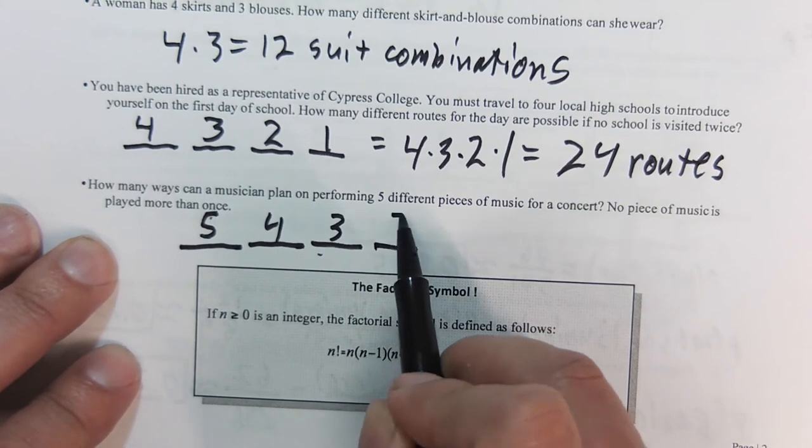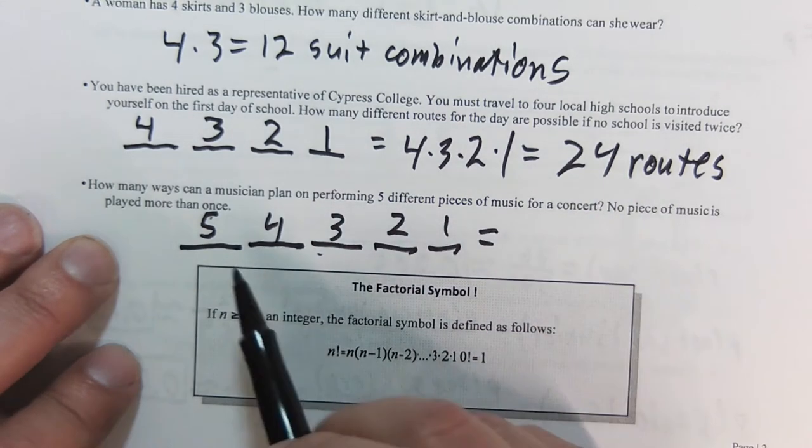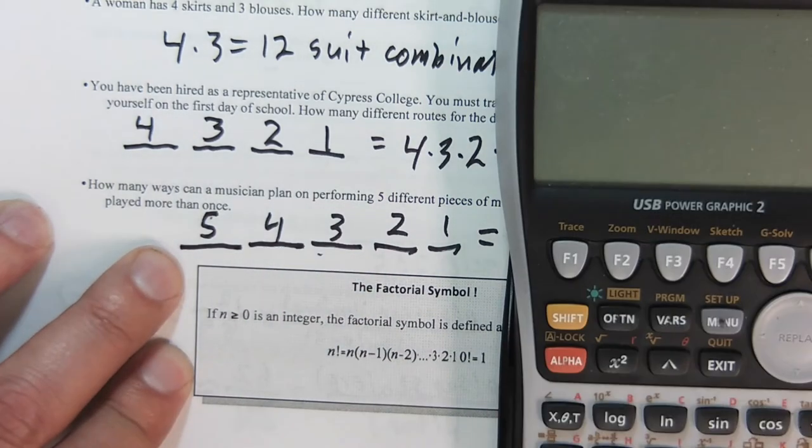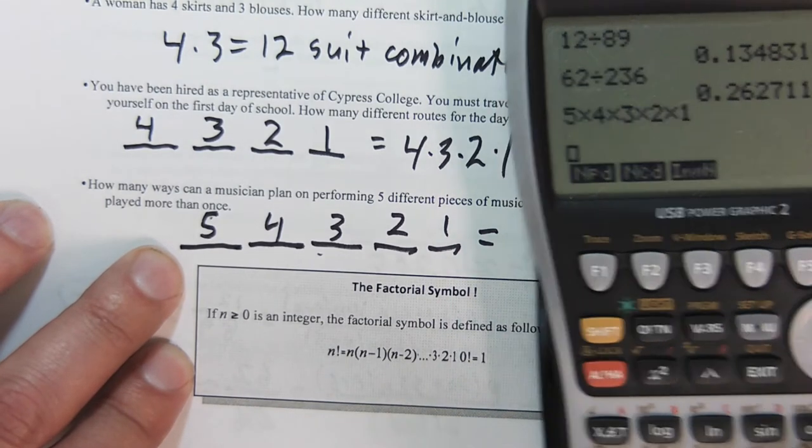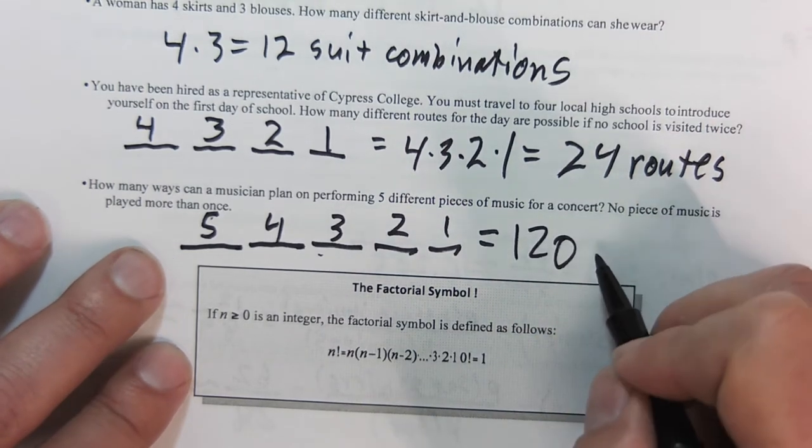then two, then one, which gives us 5 times 4 times 3 times 2 times 1, which gives us 120 concerts.